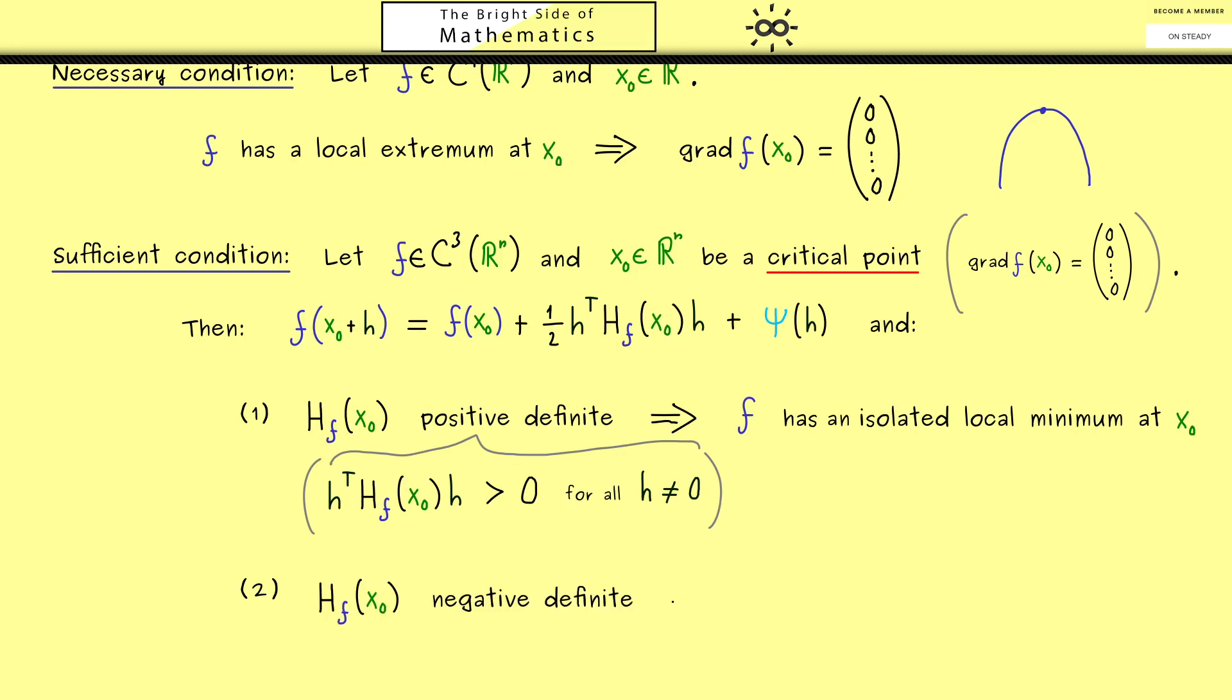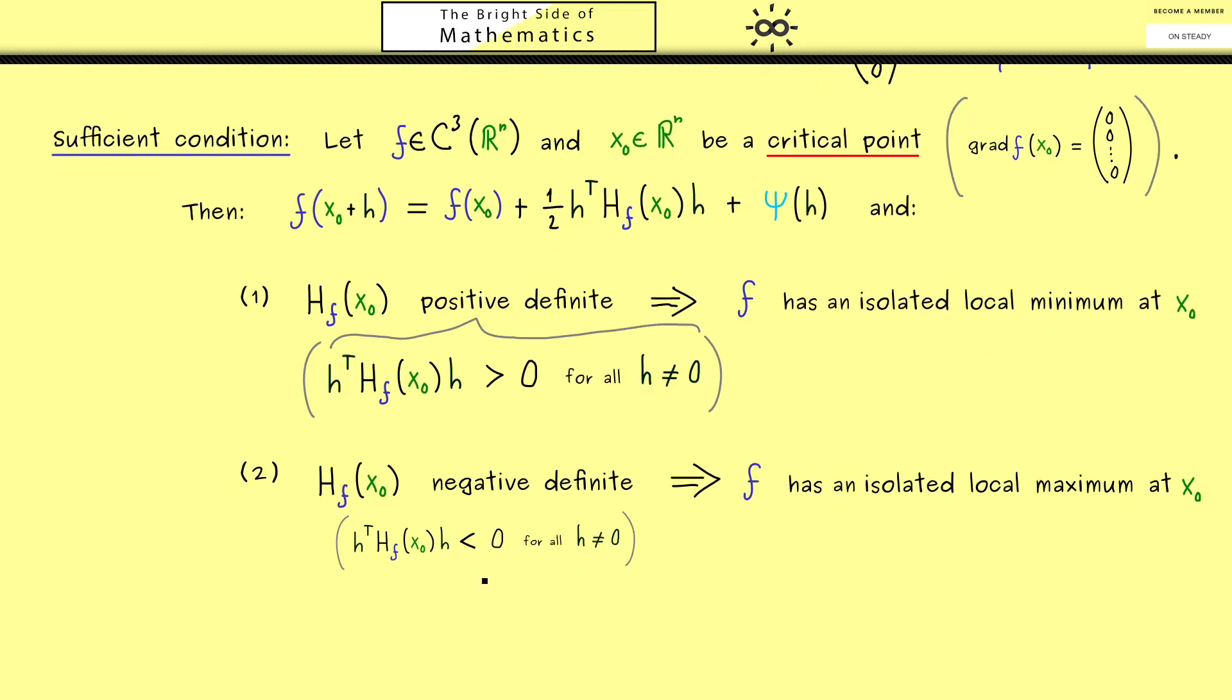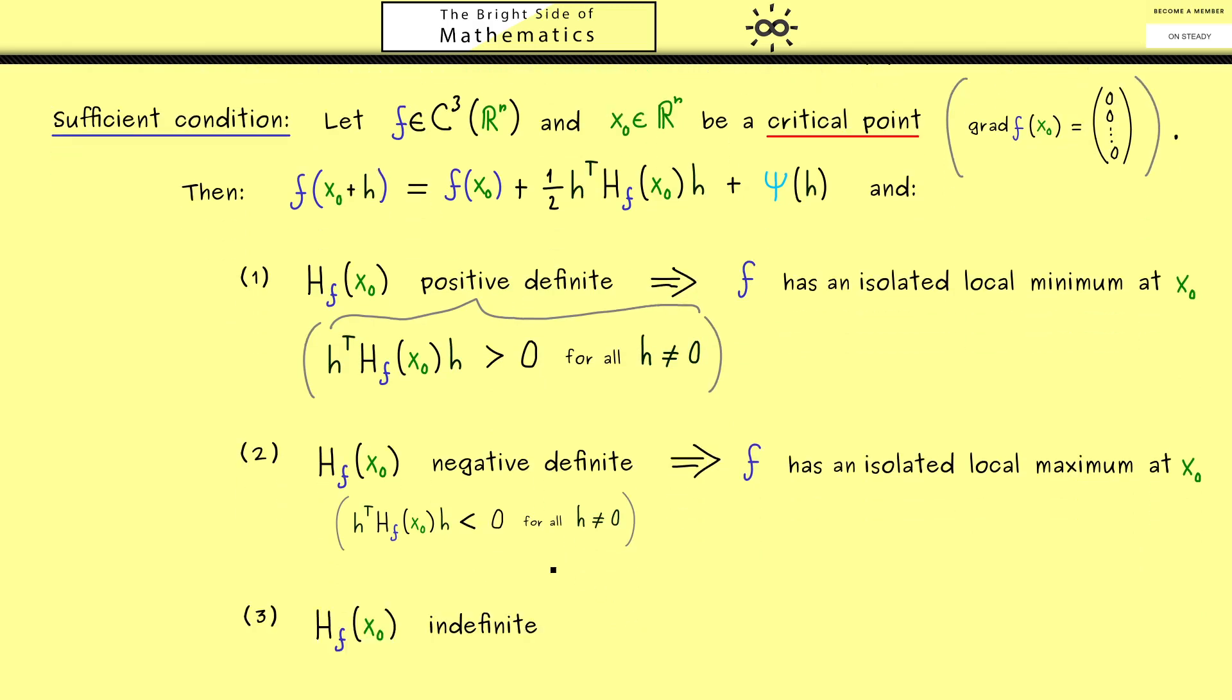And this one is analogously defined as before, just with the less sign now. And now you know, this guarantees us that we have an isolated local maximum at x_0. Moreover, we also get a nice conclusion here if we are neither positive nor negative definite. This is what we call indefinite, which means that we find at least one h where we have a positive outcome and one h where we have a negative outcome.